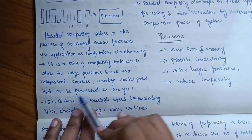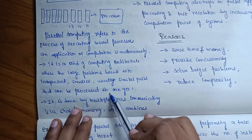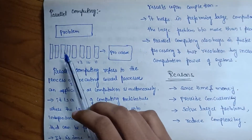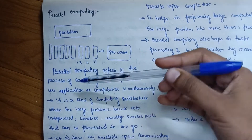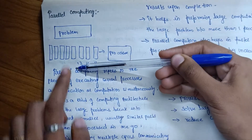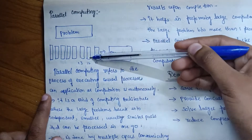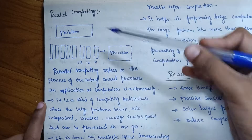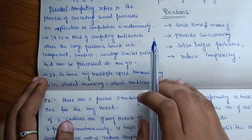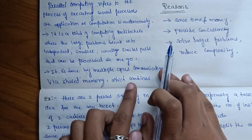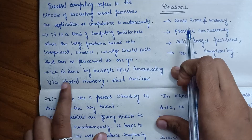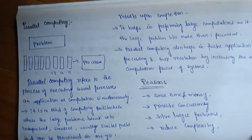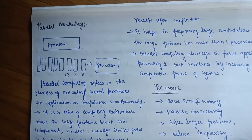These smaller parts are usually similar and can be processed all at once. We divide the large problem and process it. This is done by multiple CPUs communicating via shared memory, which combines results upon completion.